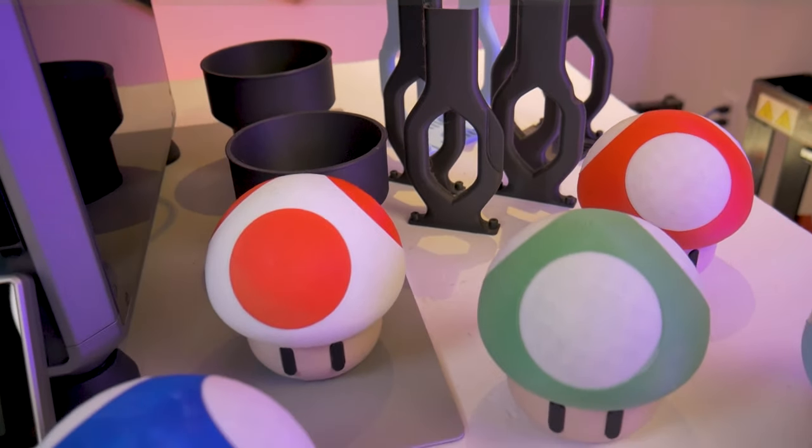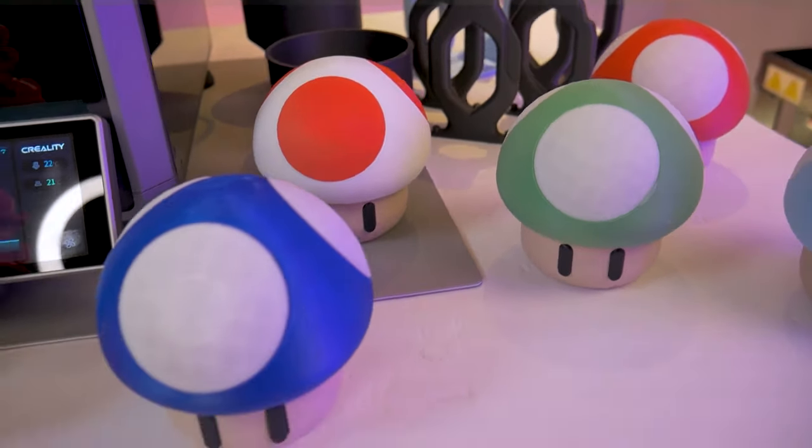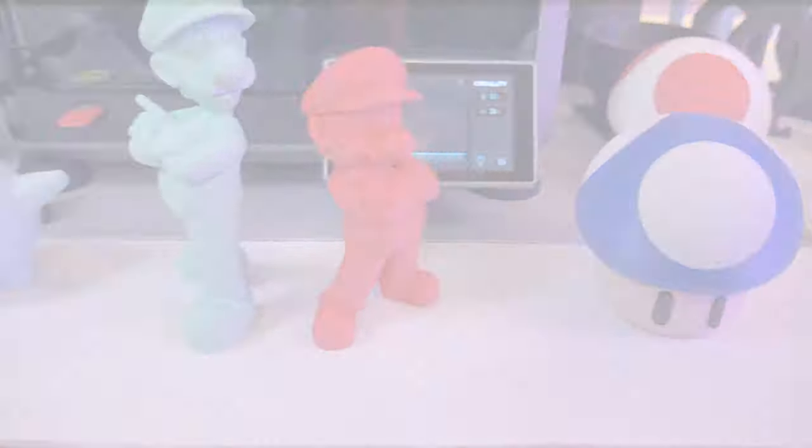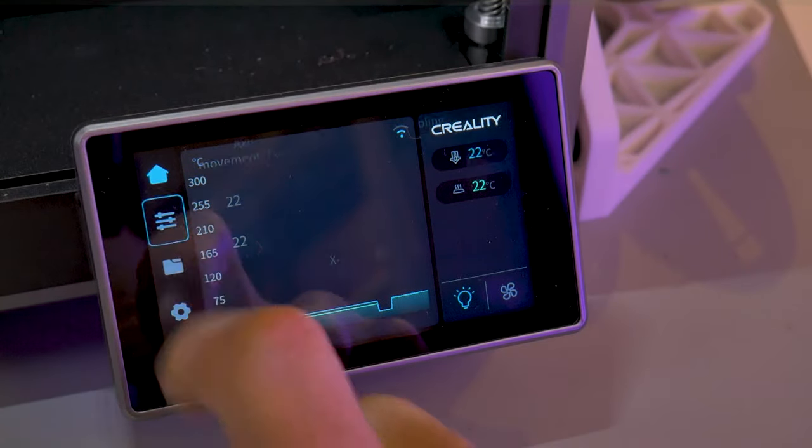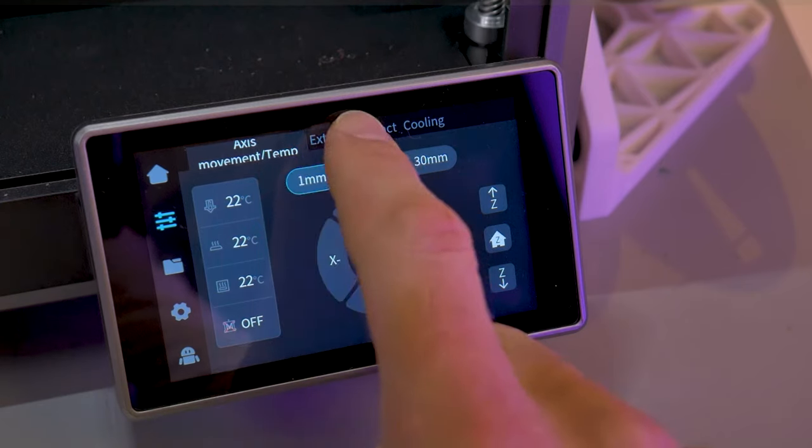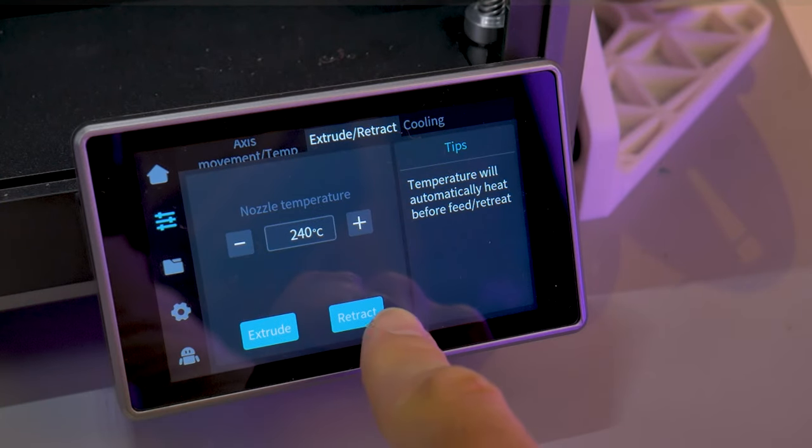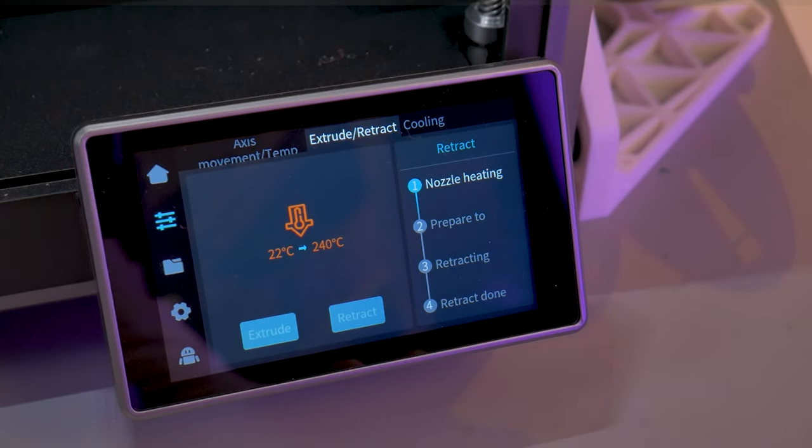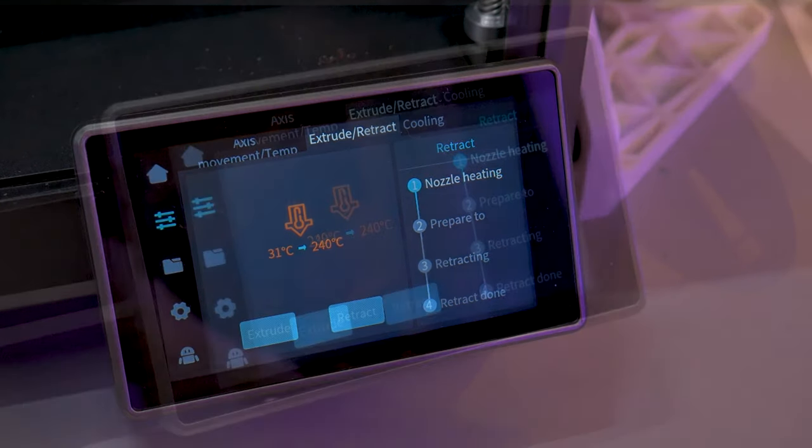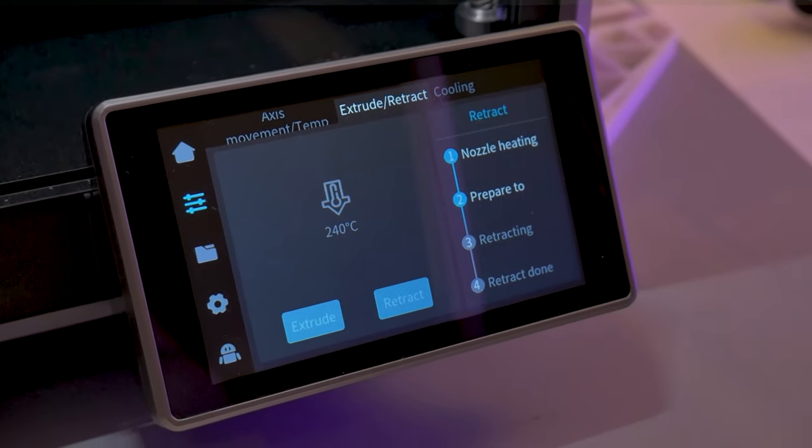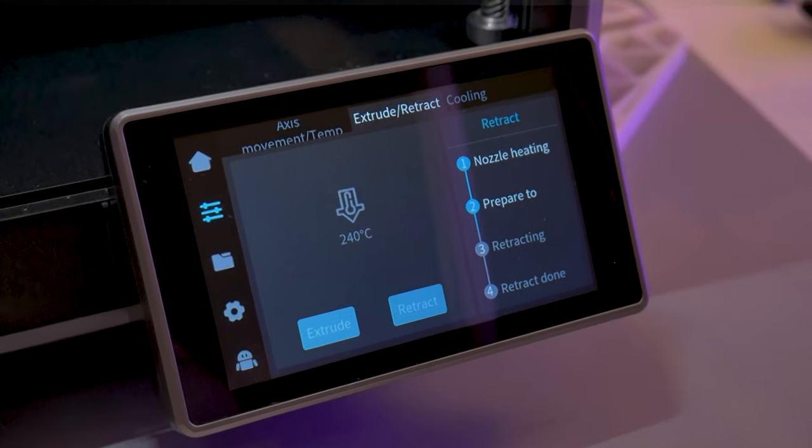The first thing we'll look at is how to properly unload the filament to prevent these extruder jams in the first place. We'll begin by using the touch screen to retract the filament. You'll go into the control section, extrude retract, and hit the retract button. The machine will take over, preheat the nozzle, extrude a small amount of filament, and then retract the remaining filament back up into the PTFE tube.